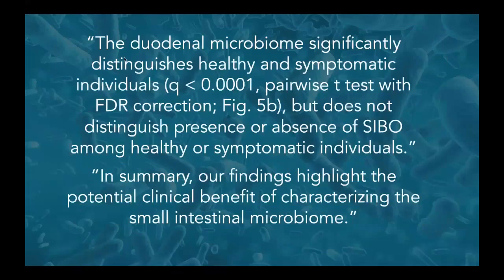The duodenal microbiome significantly distinguishes healthy and symptomatic individuals, and the finding was statistically significant, but does not distinguish presence or absence of SIBO among healthy or symptomatic individuals. Their findings highlight the potential clinical benefit of characterizing the small intestinal microbiome. If we can get detailed information about the specific composition of microbes in the small intestine, that could allow us to target our approaches more effectively — a big issue with SIBO given how many patients do not respond well to treatment or tend to relapse.